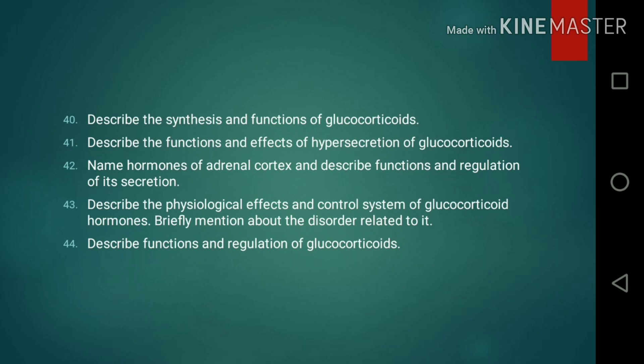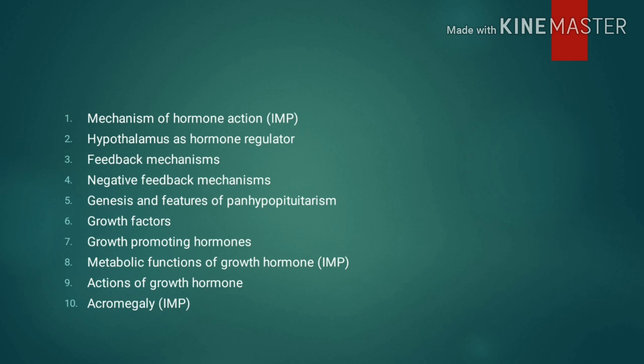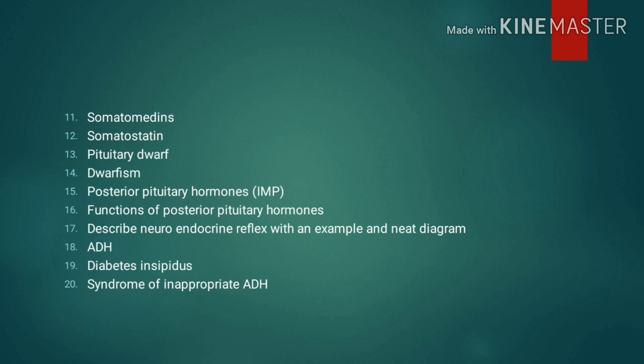Short notes: 1. Mechanism of hormone action. 2. Hypothalamus as a hormone regulator. 3. Feedback mechanisms. 4. Negative feedback mechanisms. 5. Genesis and features of panhypopituitarism. 6. Growth factors. 7. Growth promoting hormones. 8. Metabolic functions of growth hormone. 9. Actions of growth hormone. 10. Acromegaly. 11. Somatomedins. 12. Somatostatin. 13. Pituitary dwarf. 14. Dwarfism. 15. Posterior pituitary hormones.